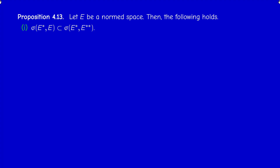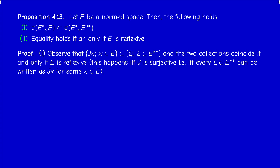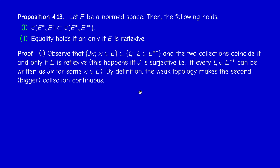We have an increasing sequence of topologies, and equality holds if and only if E is reflexive. The collection {J(x) : x ∈ E} is contained in the collection {ξ : ξ ∈ E**}, because J(x) is an element of E**. The two collections coincide if and only if J is surjective, i.e., E is reflexive. By definition, the weak topology makes the larger collection continuous, therefore it makes the smaller collection continuous; but the weak-star topology is the smallest topology making only the smaller collection continuous.